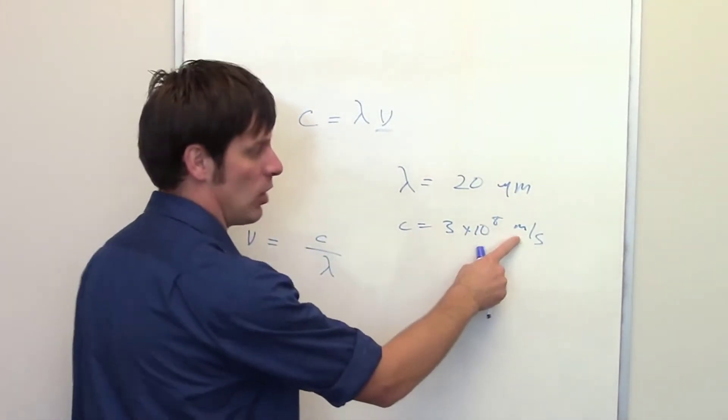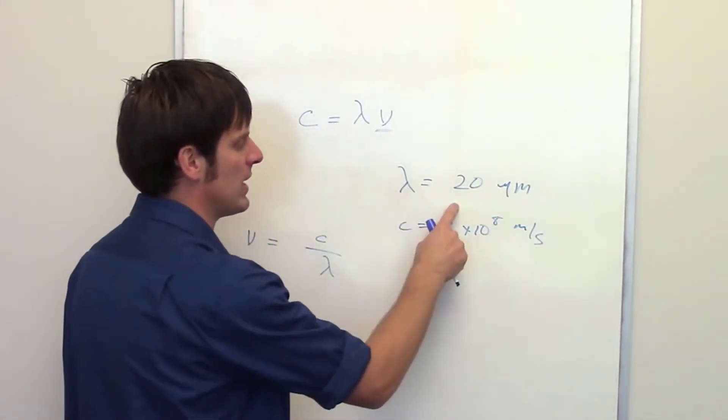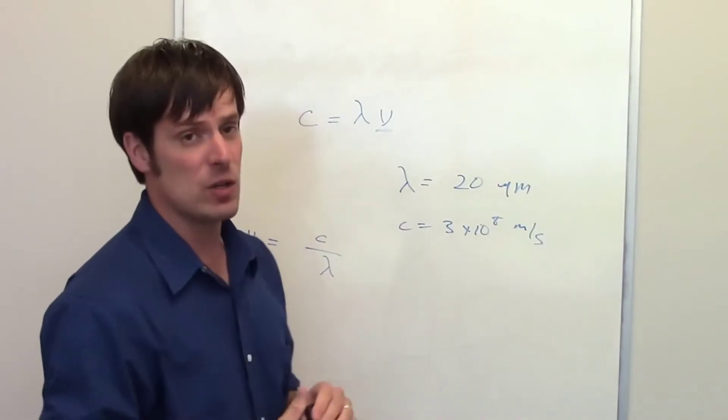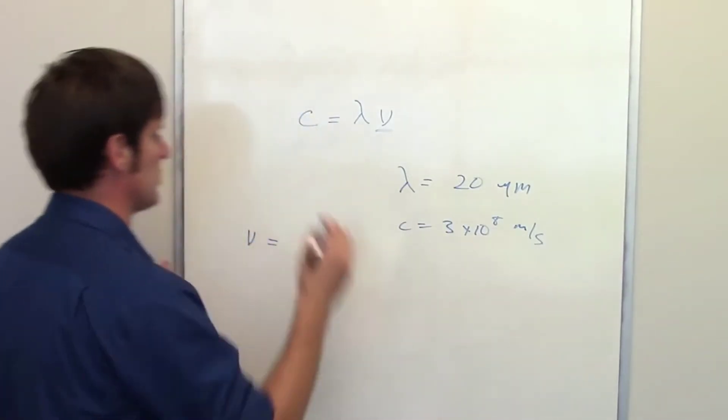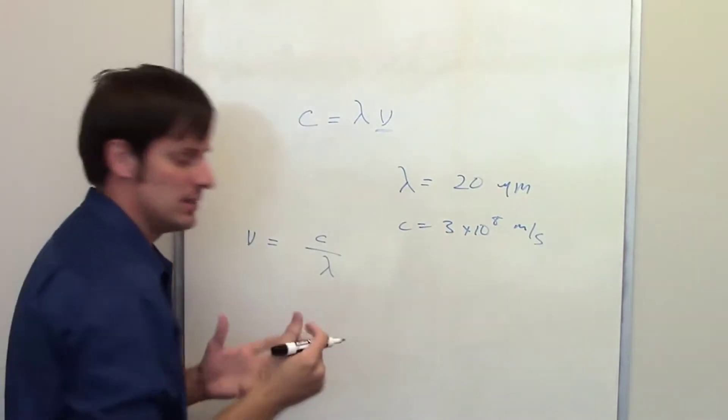The speed of light units that we have are meters per second. Our wavelength units are in micrometers. I'd like to do this by converting the micrometers into meters. We do that using dimensional analysis.